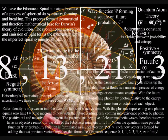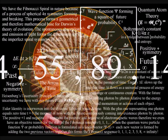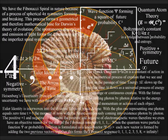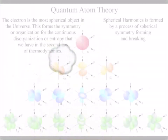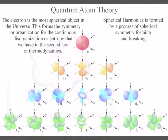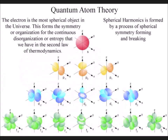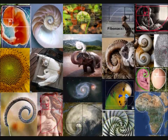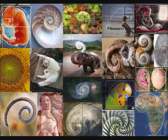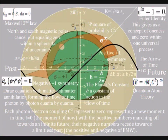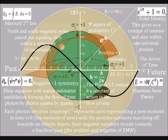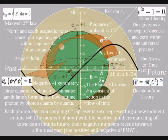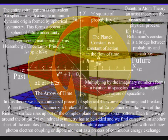At the most fundamental level, this represents a process of spherical symmetry forming and breaking, that forms the imperfect spiral symmetry of life, that can be seen as the Fibonacci spiral in nature. When the spherical symmetry is broken, it forms spiral symmetry in the form of the Riemann surface, rising up out of the complex plane, forming a spiral pattern.